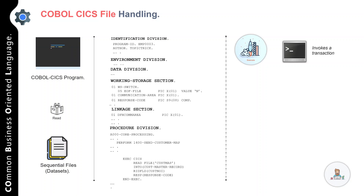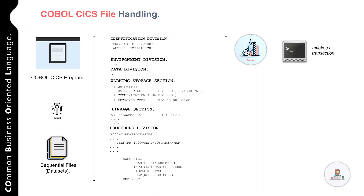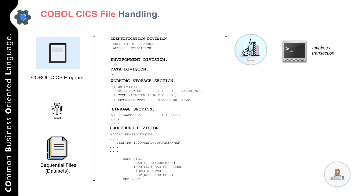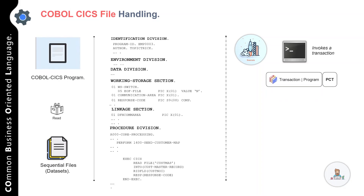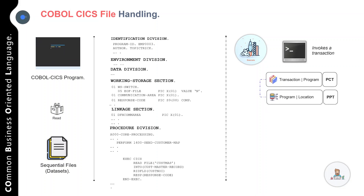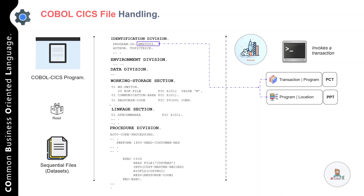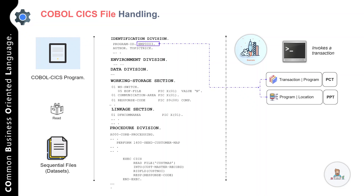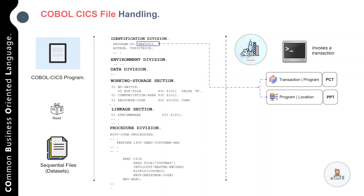If you want to run your COBOL CICS program, you cannot do it directly with a JCL, because under the CICS environment a user cannot directly invoke a program. Instead the user invokes a transaction, which in turn specifies the application program to be executed. When a user invokes a transaction, CICS locates the application program associated with that transaction. Every transaction must be defined in a special CICS table called the Program Control Table, or PCT.